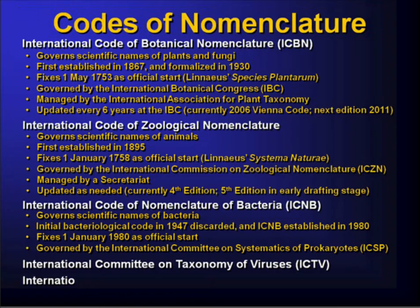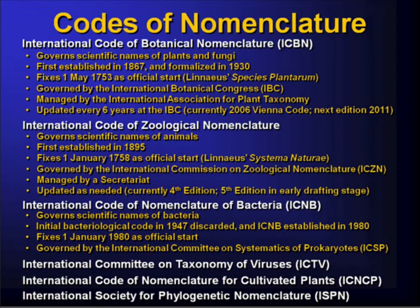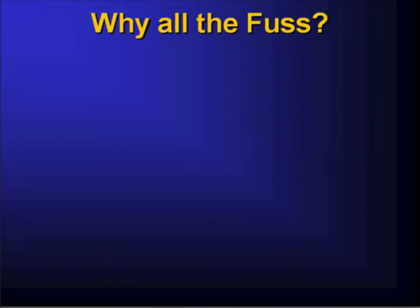There are three other codes: one for viruses, one for cultivated plants, and a newer one set up by the International Society of Phylogenetic Nomenclature — known as PhyloCode, which we'll probably hear more about tomorrow afternoon. I'm going to focus mostly on the botanical and zoological codes for the rest of the talk — not because they're the best codes, and not because they cover most organisms on Earth, but because these are the two where most TDWG-related discussions have occurred.